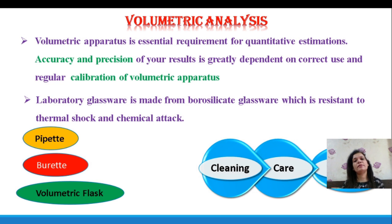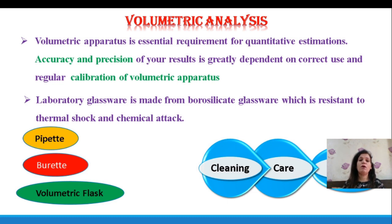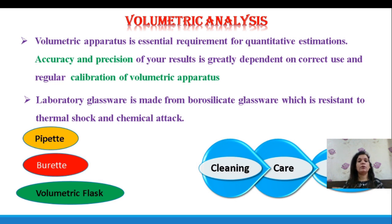The volumetric analysis apparatus involved during measurement are the pipette, burette, and volumetric flask. The volumetric flask is generally used during preparation of a standard solution of known concentration. The burette is a long, uniform-diameter assembly which delivers a variable volume into a conical flask where the analyte is present. The pipette delivers a definite volume from one solution to another. Most of this glassware is made of borosilicate glass, which is resistant to thermal shock and chemical attack.